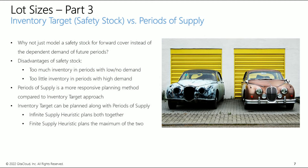Planners may be used to planning such forward cover with safety stock. Static periods of supply is a better approach than safety stock, as it is responsive to the demands over the coverage span at any point in time. This avoids building too much or too little safety stock if demand fluctuates quite a bit. However, we can consider both approaches simultaneously if we must. Infinite supply heuristics plans both together, meaning safety stock as an additional buffer on top. Finite supply heuristic plans the higher of the two — guaranteeing a minimum cover while remaining responsive if demands and coverage span exceed the safety stock defined by the planner.